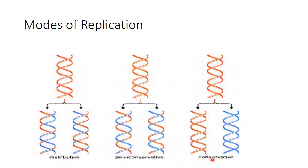The third method is called the conservative method. It explains that the complete parental DNA remains as it is and synthesizes an entirely new DNA as its copy, with both new strands. So one of the daughter DNAs is the original parental DNA and the other is newly synthesized. In this case, one DNA is totally conserved — exactly the parental DNA without any change — and therefore it is called the conservative method of replication.